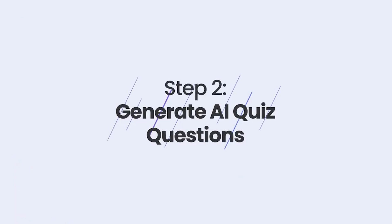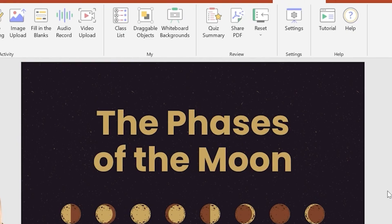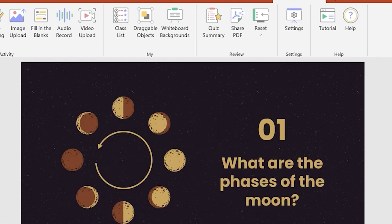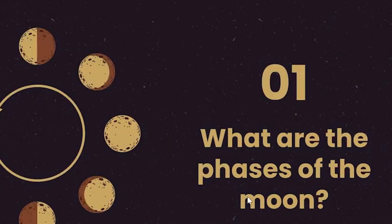Once the first step of downloading ClassPoint is taken care of, we can go ahead and start making the AI quiz. Here I have a pre-made slide deck already for the class, and I want to ask my students some questions to get them warmed up and test their knowledge of the phases of the moon before we get started. We can also add AI questions from throughout the presentation to use at the end for review and test understanding from the entire lesson.